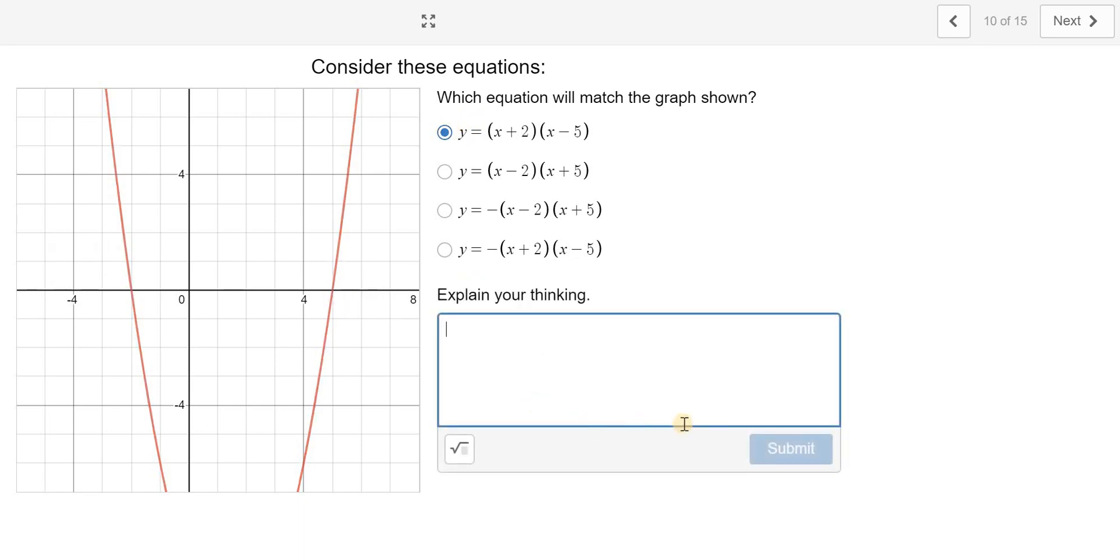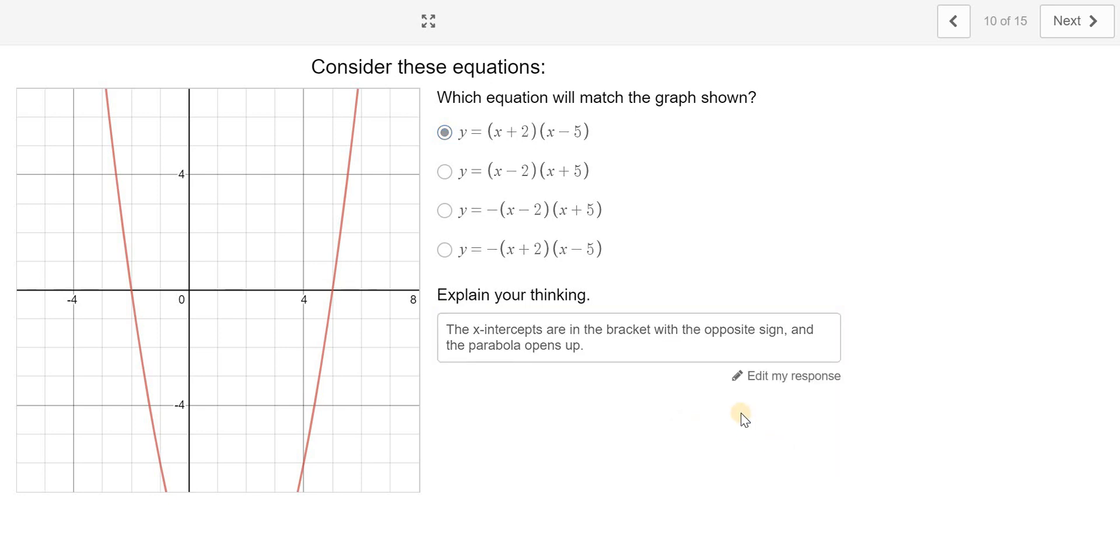So you're just going to type that in for me. So the x-intercepts are in the bracket with the opposite sign and the parabola opens up. So that's why you picked your answer.